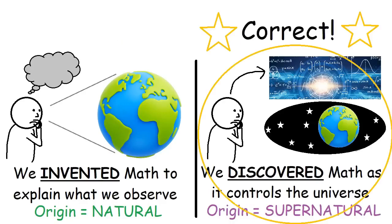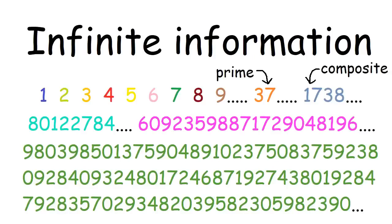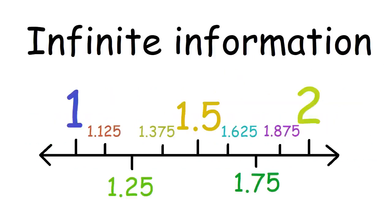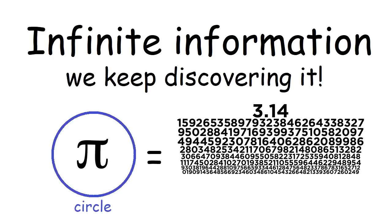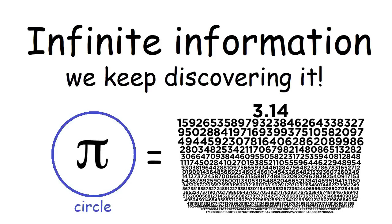Here's why the latter option is correct. Math contains infinite information. There's an infinite number of numbers, each with their own individual properties, and there's an infinite number of numbers in between any two numbers. And we keep discovering things. Pi, which is the number that explains the area of a circle, has an infinite number of digits that we keep discovering by doing calculations.